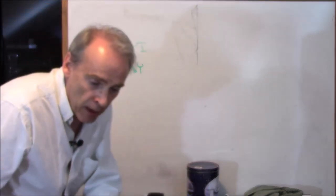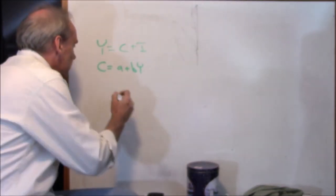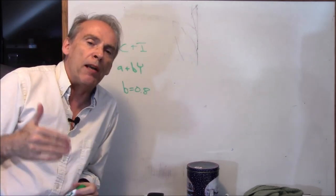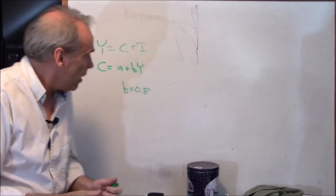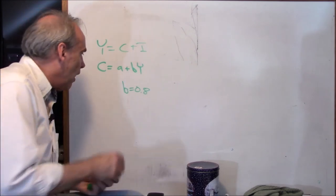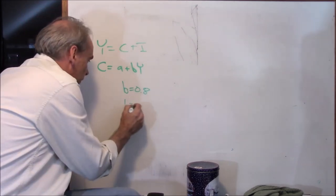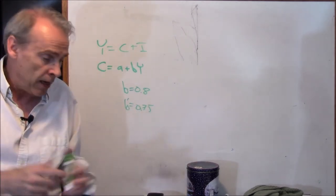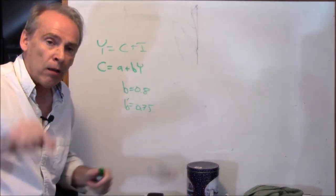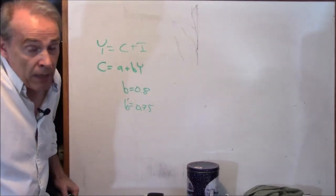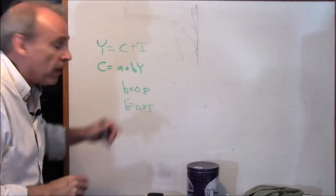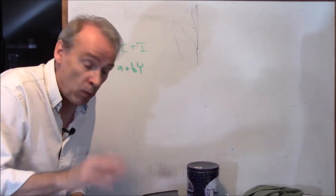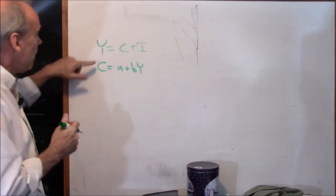If B is 0.8, that indicates that for every dollar's worth of increase in incomes, people spend an extra 80 cents and save 20 cents. If it's 0.75, for every dollar of new income, they spend 75 cents. B can't be bigger than one in this macro model — you individually can spend more than you earn, but the macro economy cannot. And it's not going to be smaller than zero. This is going to be really important.